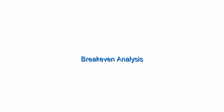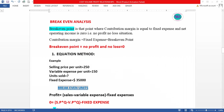Now we are going to discuss break-even analysis. In this CVP chapter, we have discussed the contribution margin income statement, and now we are going to discuss break-even analysis. Break-even is the point where no profit and no loss exist — profit is zero. It is the point where contribution margin is equal to fixed expense and net operating income is zero.